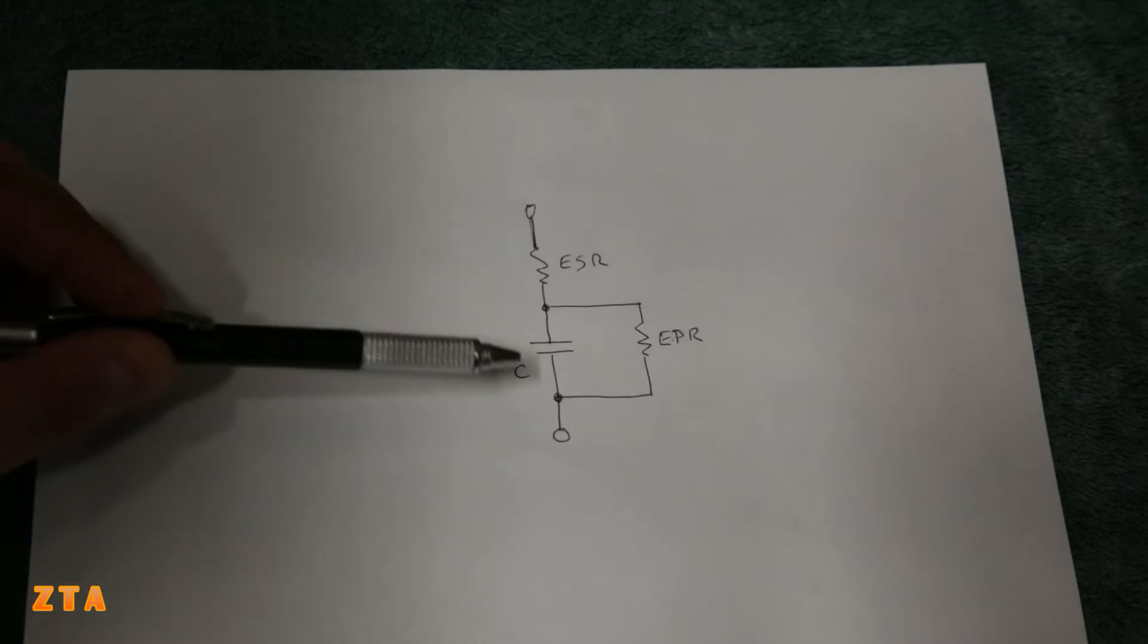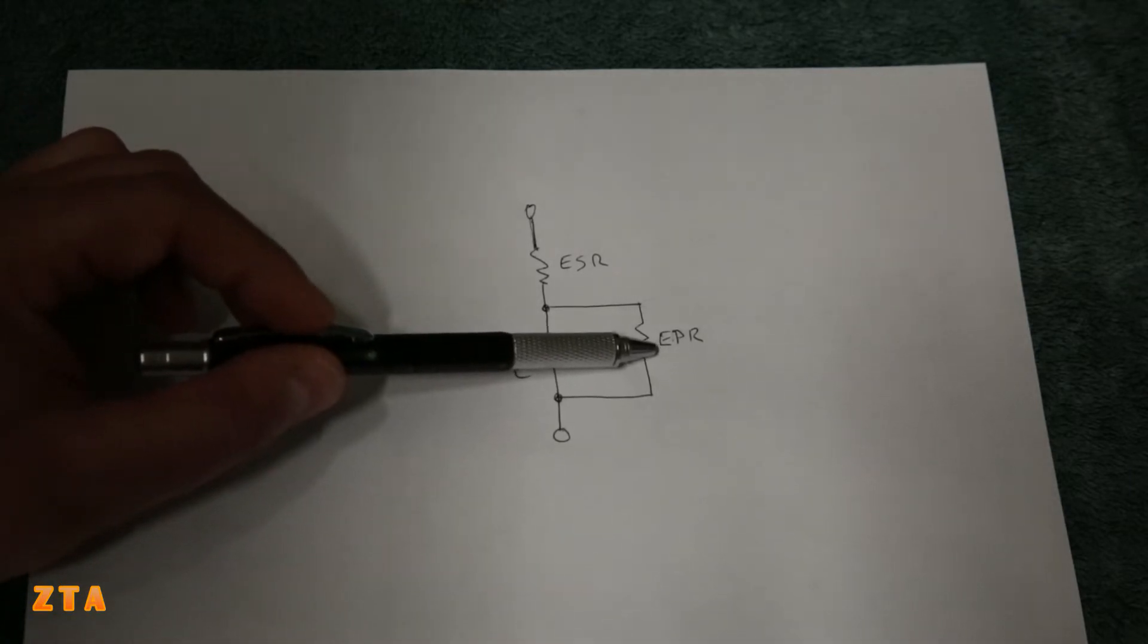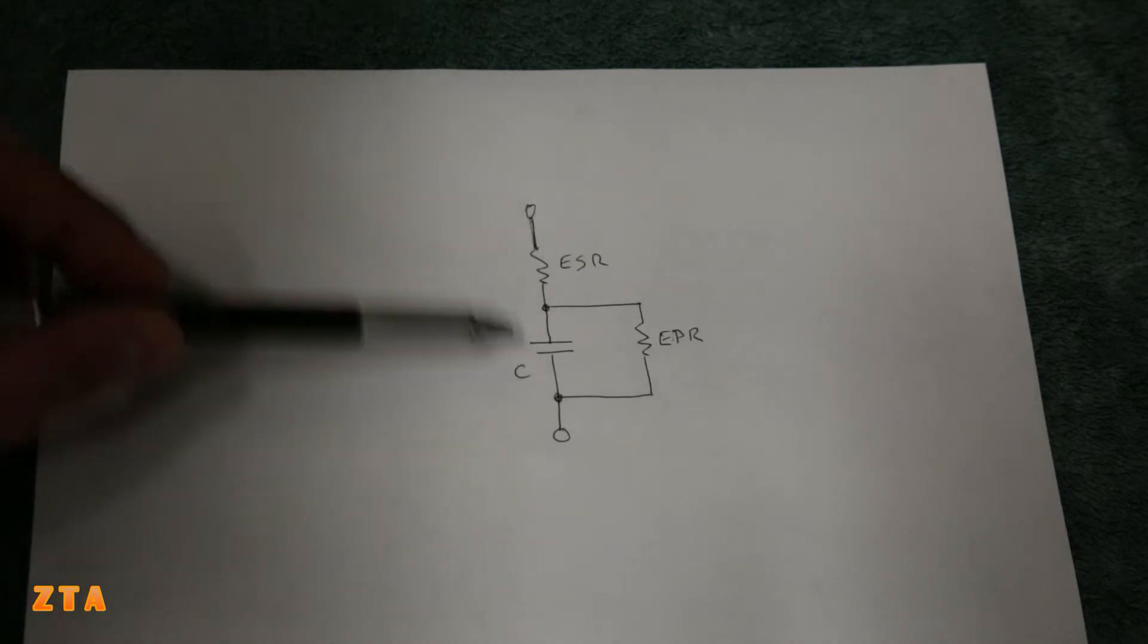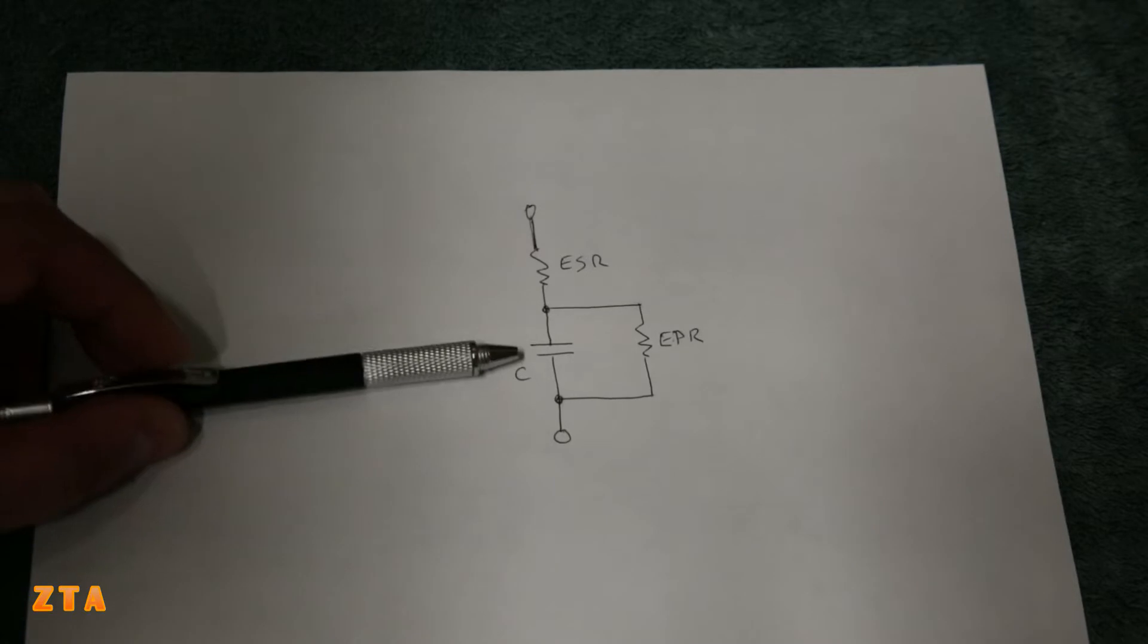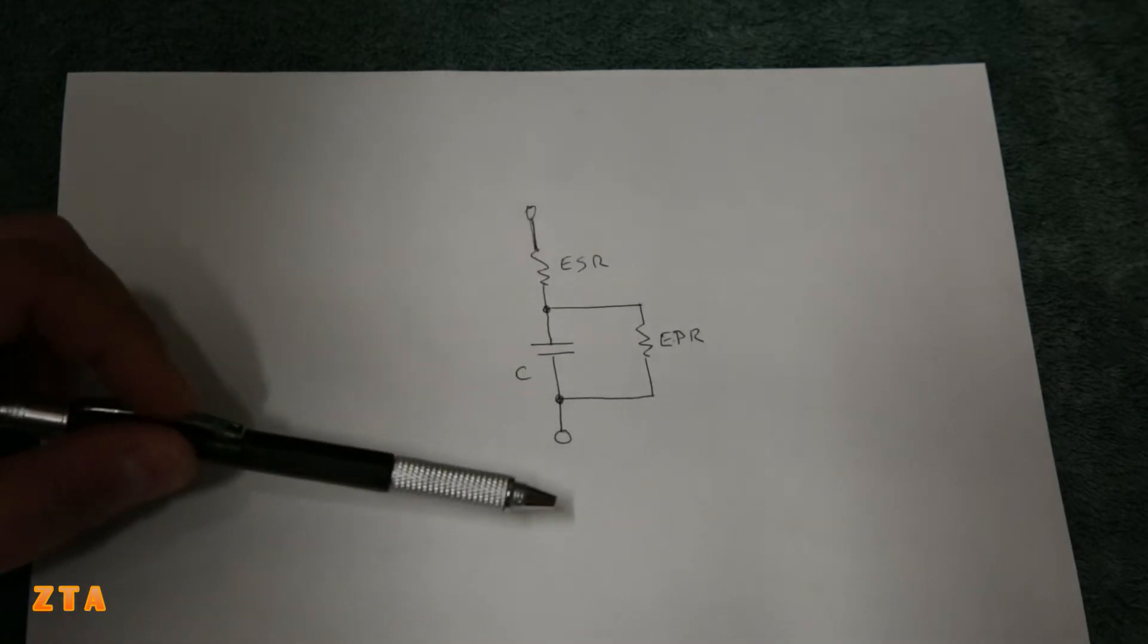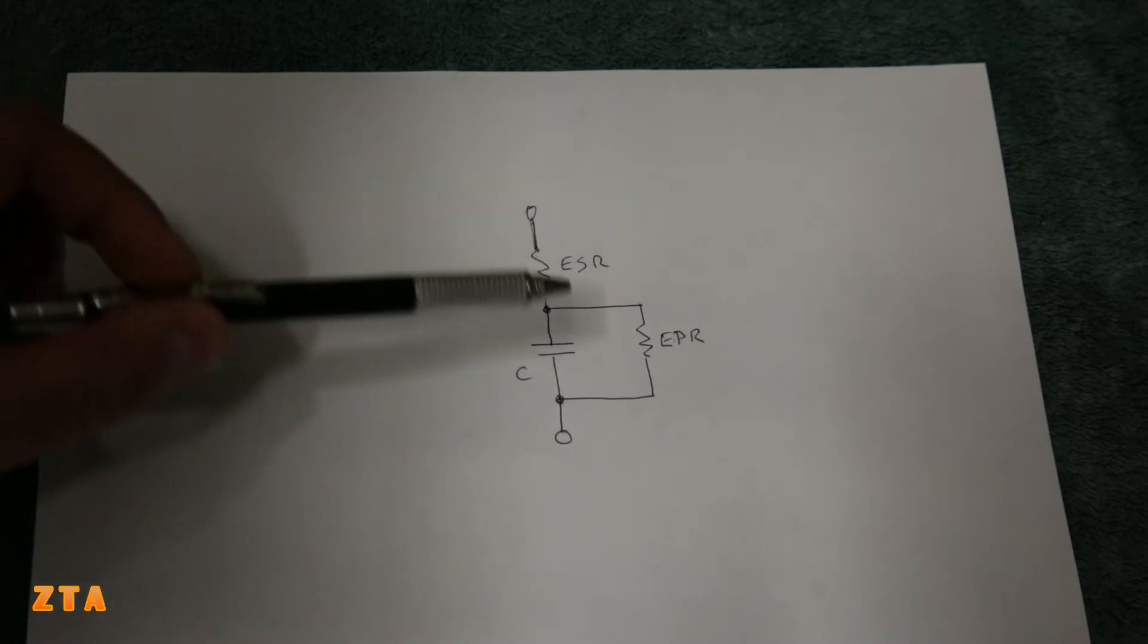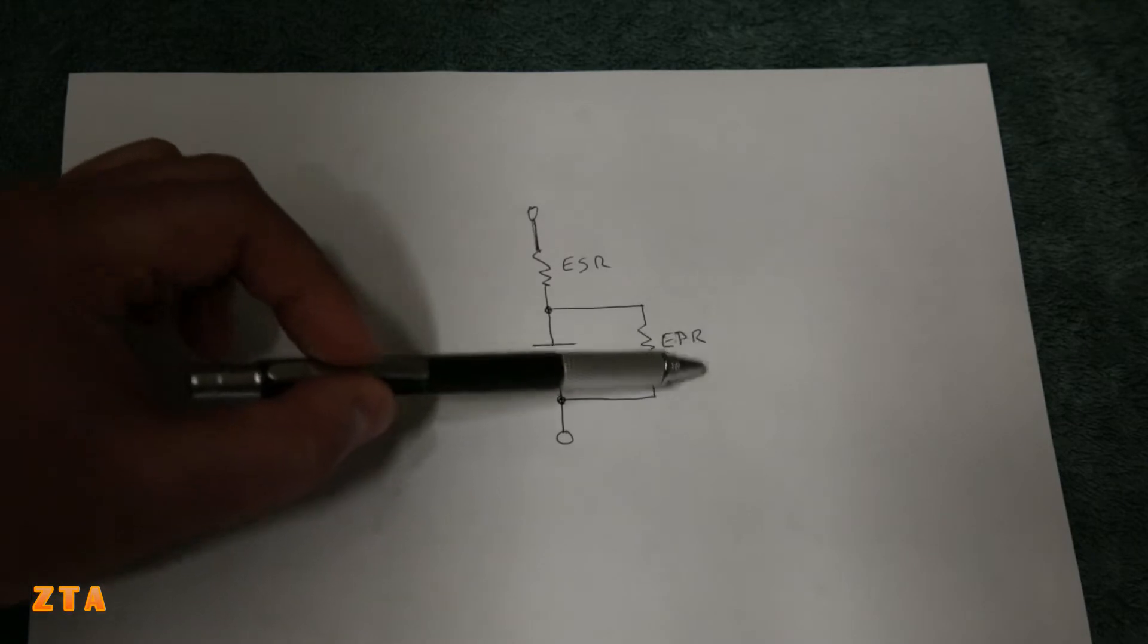Imagine if you have a power supply filtering capacitor and this EPR is tens of kilo ohms, and you're filtering 100 volts. That's going to draw quite a bit of current just across that capacitor. It's going to diminish the effectiveness of that capacitor. Today we're going to build this meter for five dollars to measure this EPR.